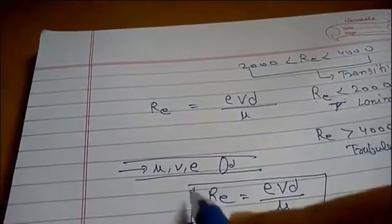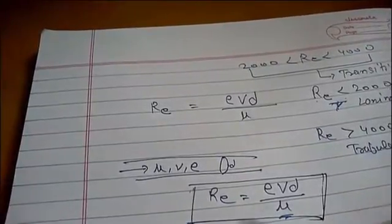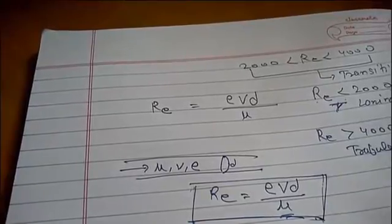So you can say Reynolds number is the degree to represent what kind of flow is flowing through the pipe.